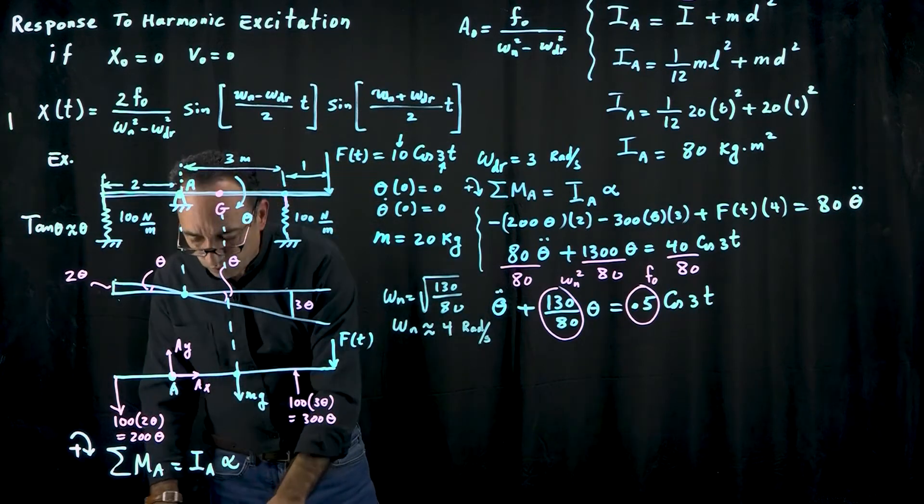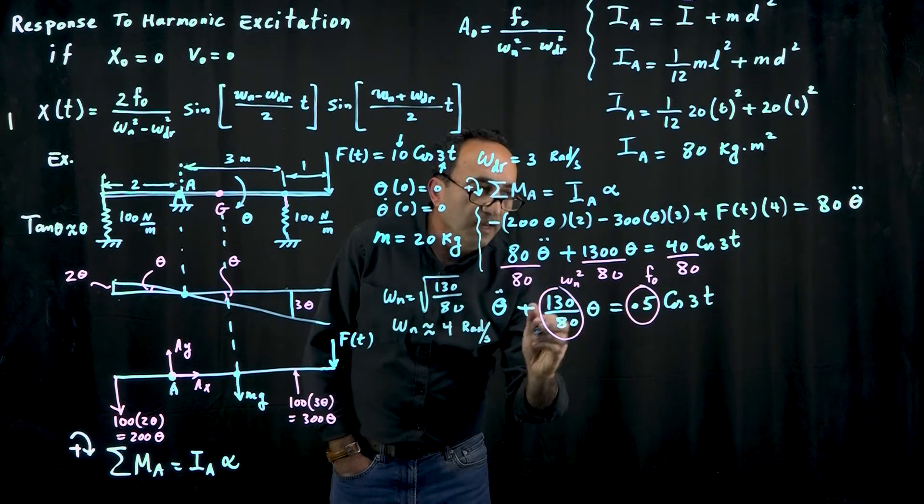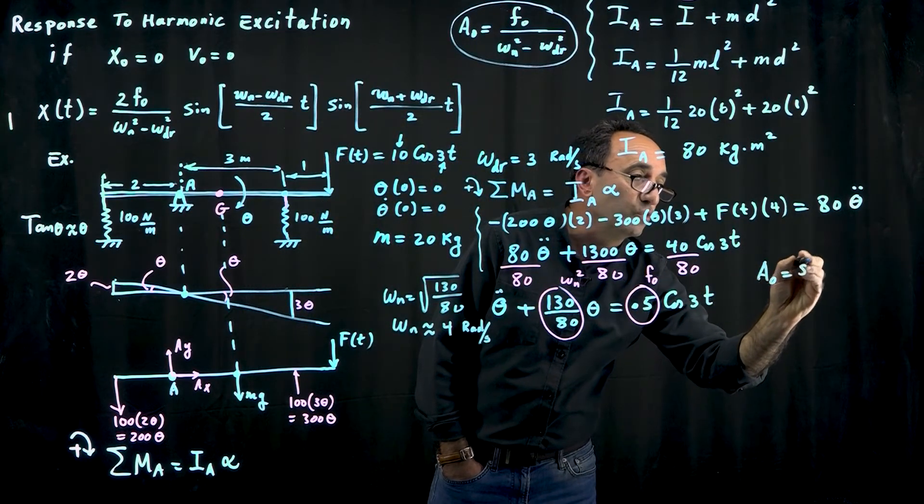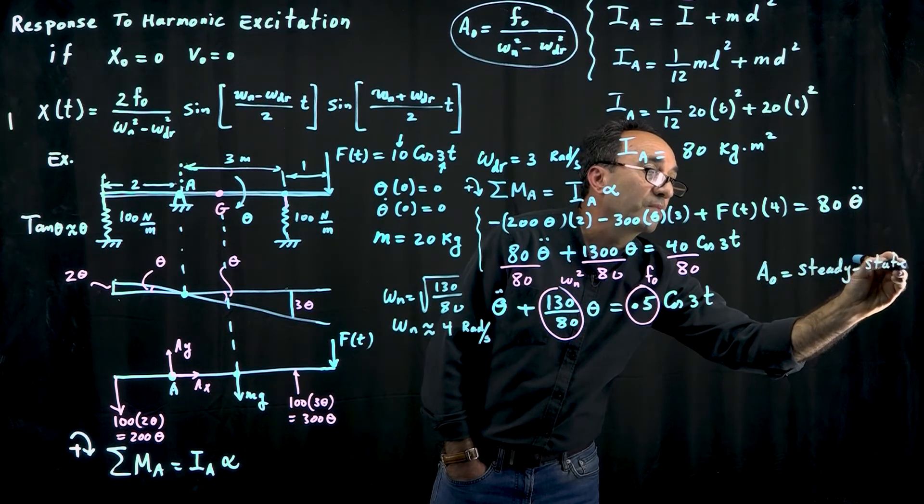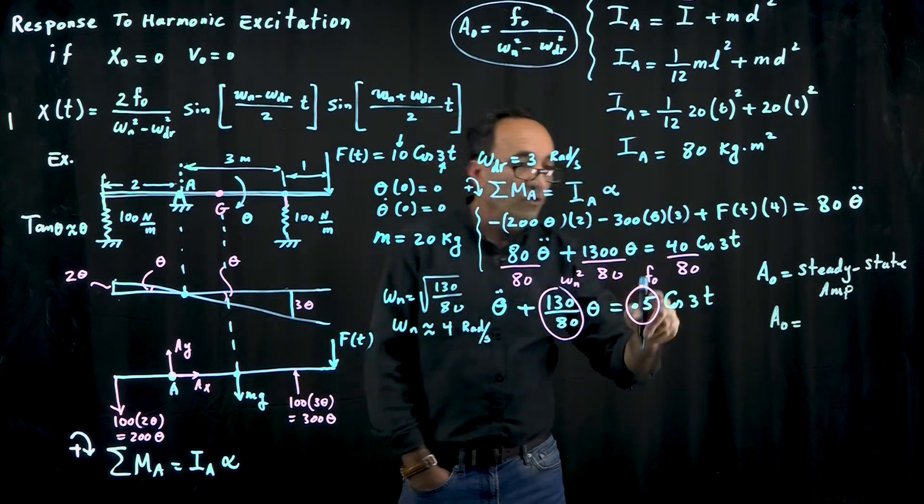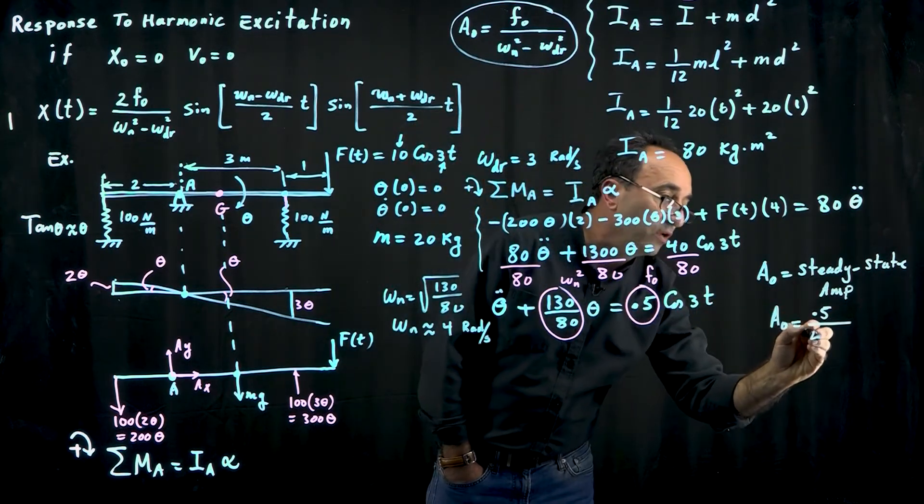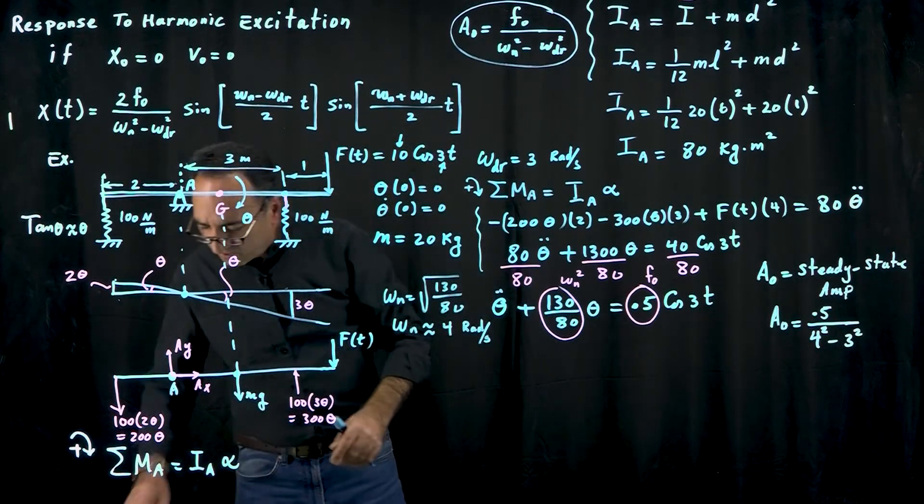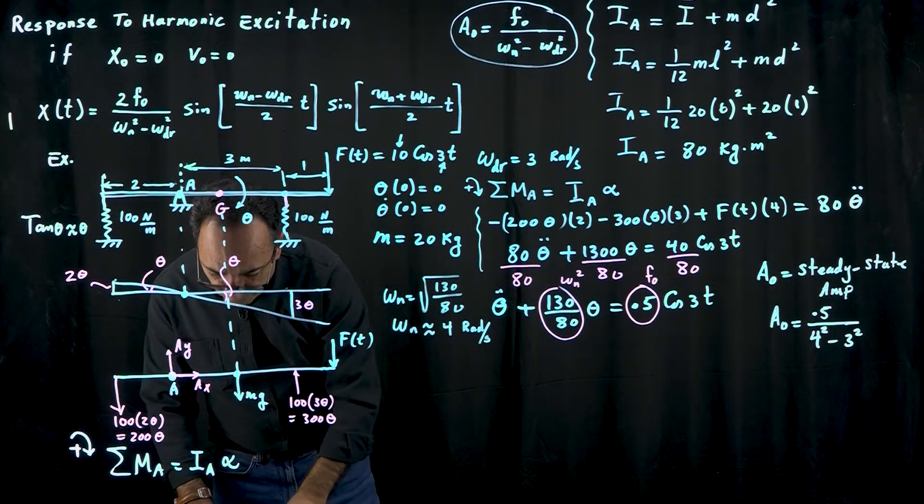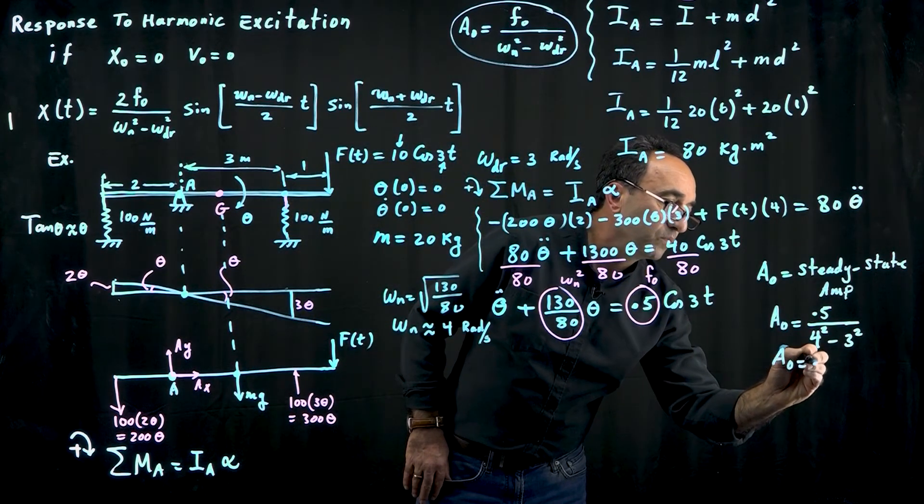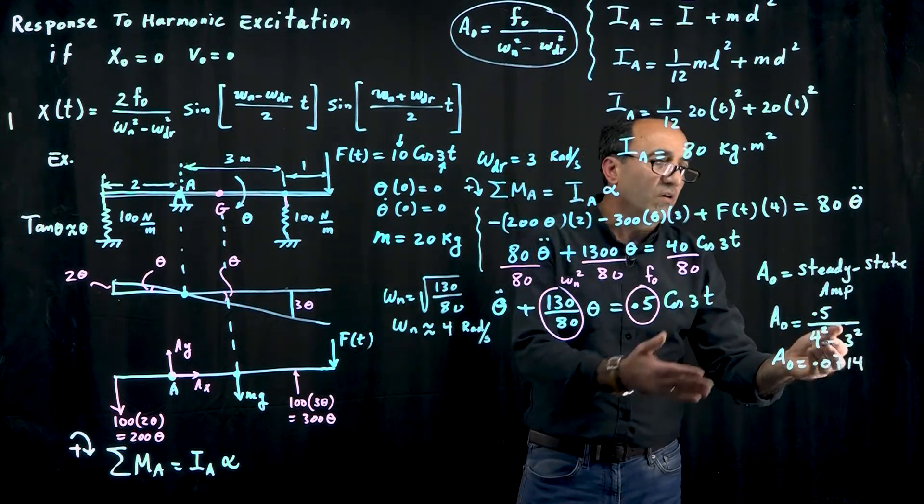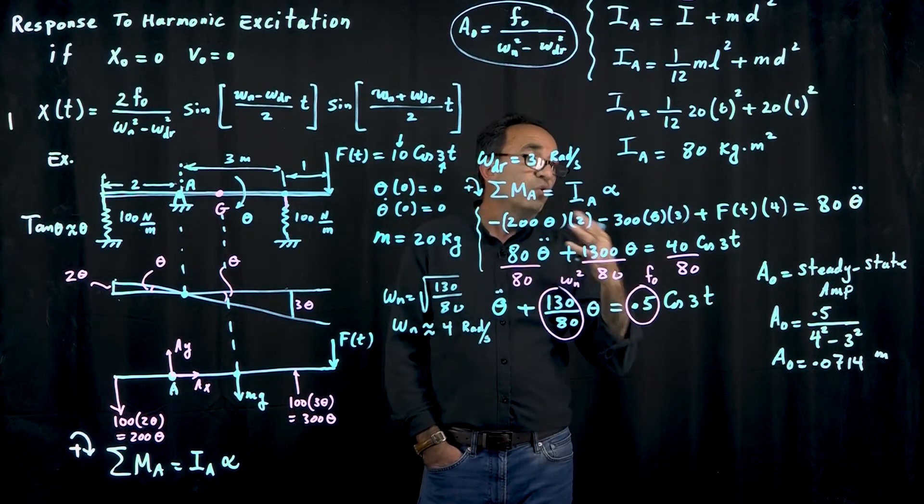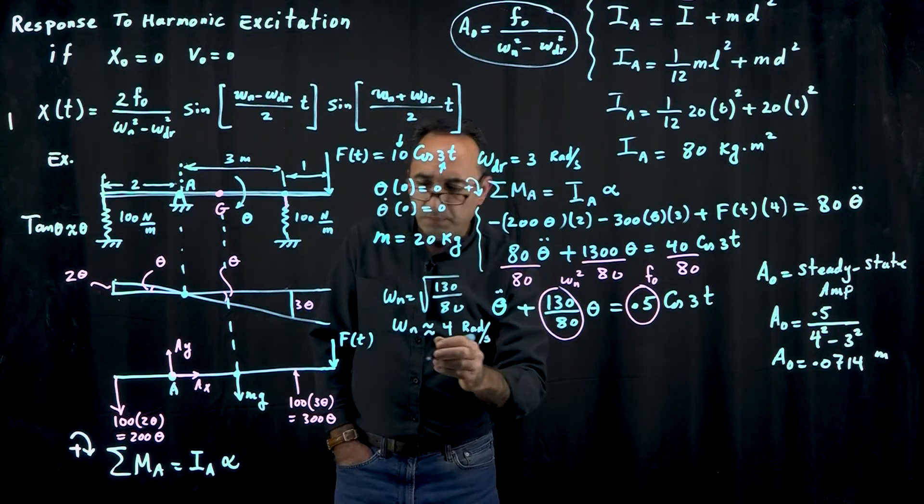If you want to find the steady state amplitude A0, it turns out that is f0, which is 0.5 normalized amplitude, divided by omega_n which is about 4, squared minus your driving frequency squared which is 3. So 16 minus 9, that's 7, 0.5 over 7 is roughly about 0.0714. This should have units of meters. That's your steady state amplitude. Steady state means over a long period of time.